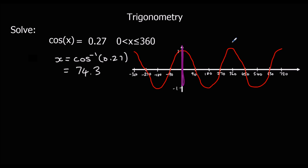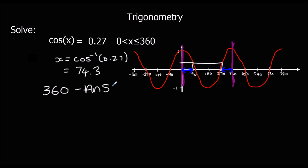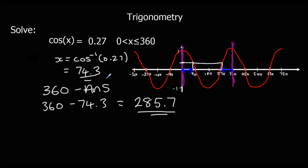Cos is the same as sin in that it repeats every 360 degrees, so we just look at the first 360 degrees. We've got 0.27 on the graph here and here, and we use symmetry again. This distance here is the same as this distance here. The second answer for a cos question is 360 minus the first answer: 360 minus 74.3 gives us 285.7 degrees.